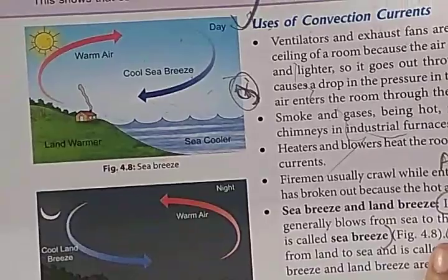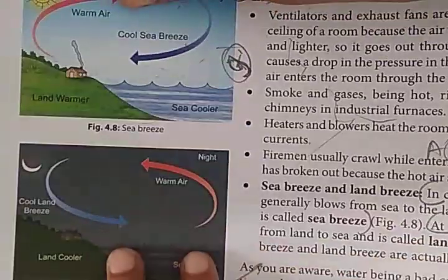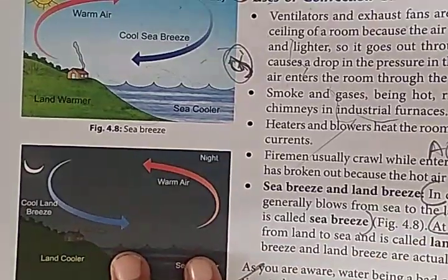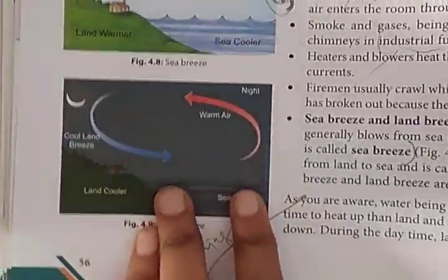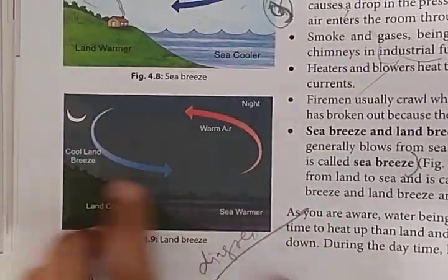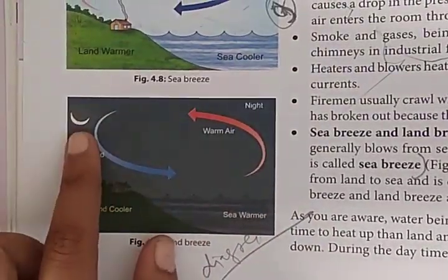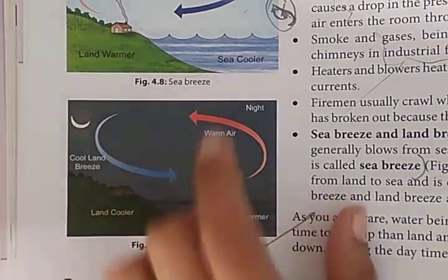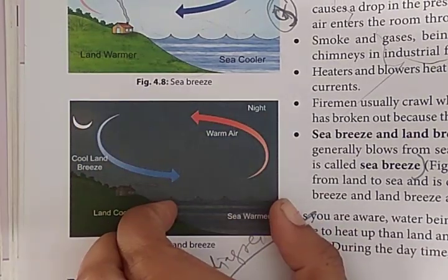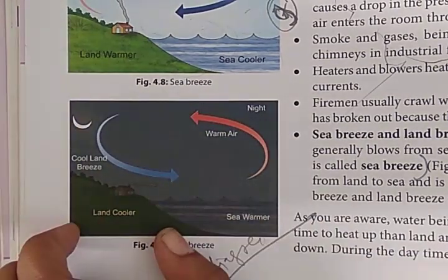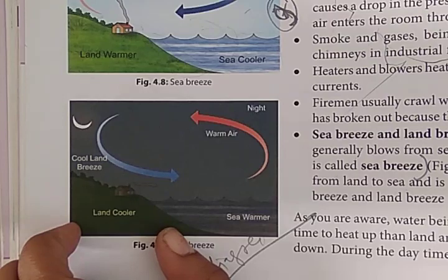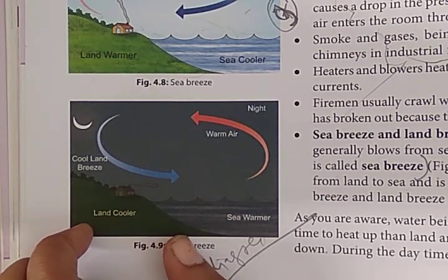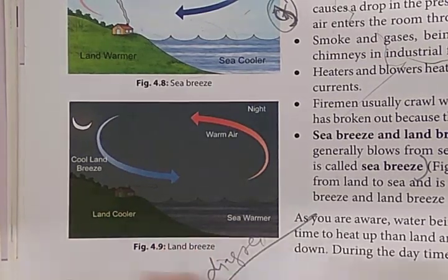Now, when it comes to night, the land cools down quickly while the sea remains warmer because water is a poor conductor of heat and takes a long time to heat up and cool down.